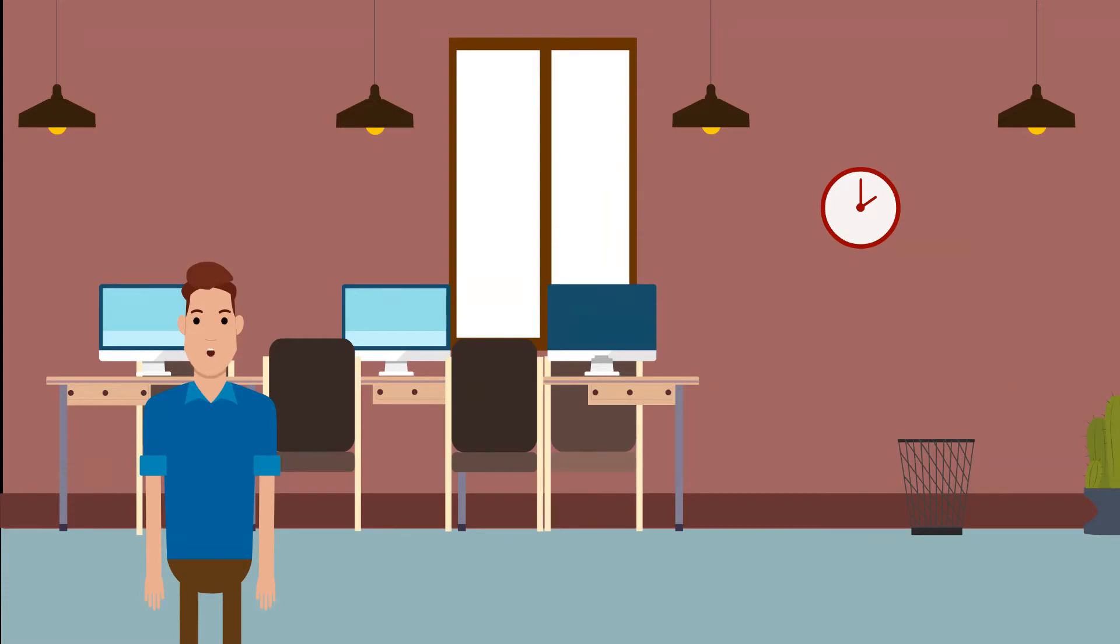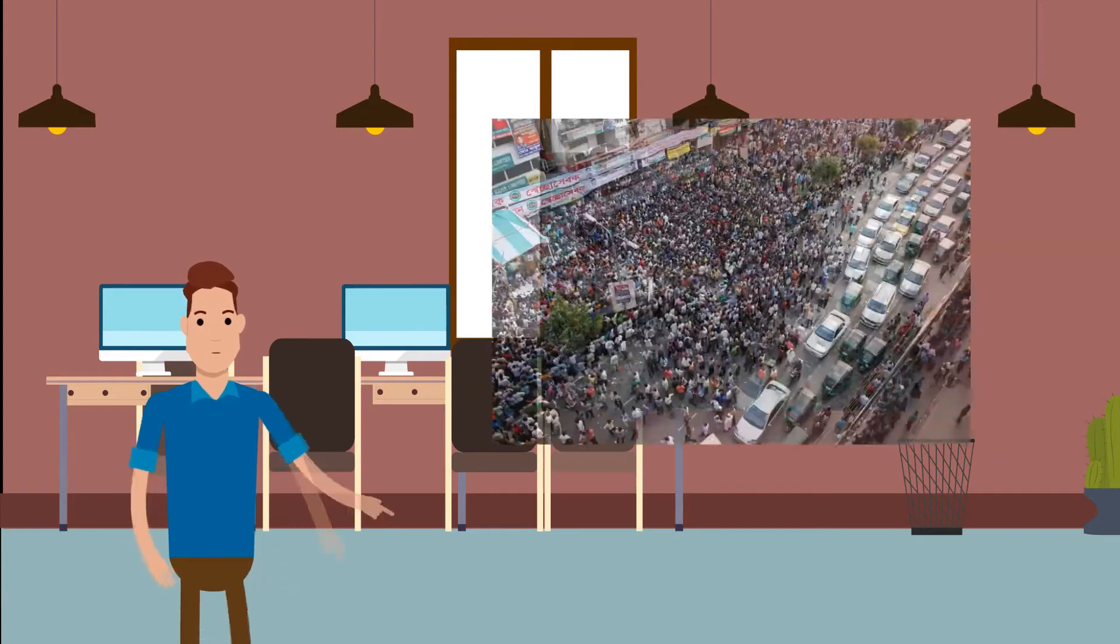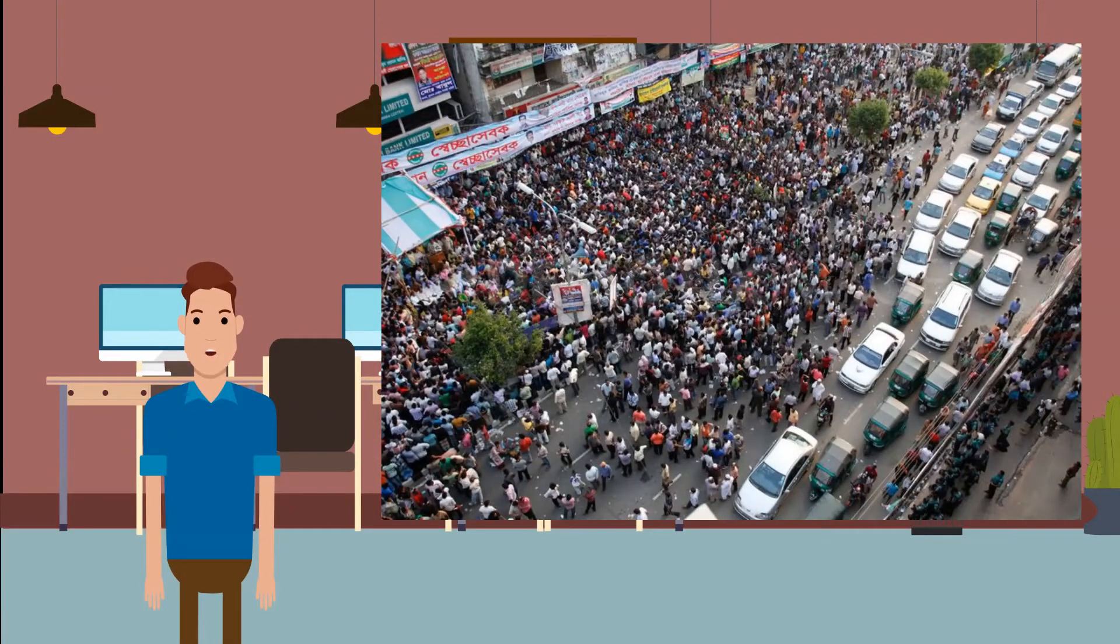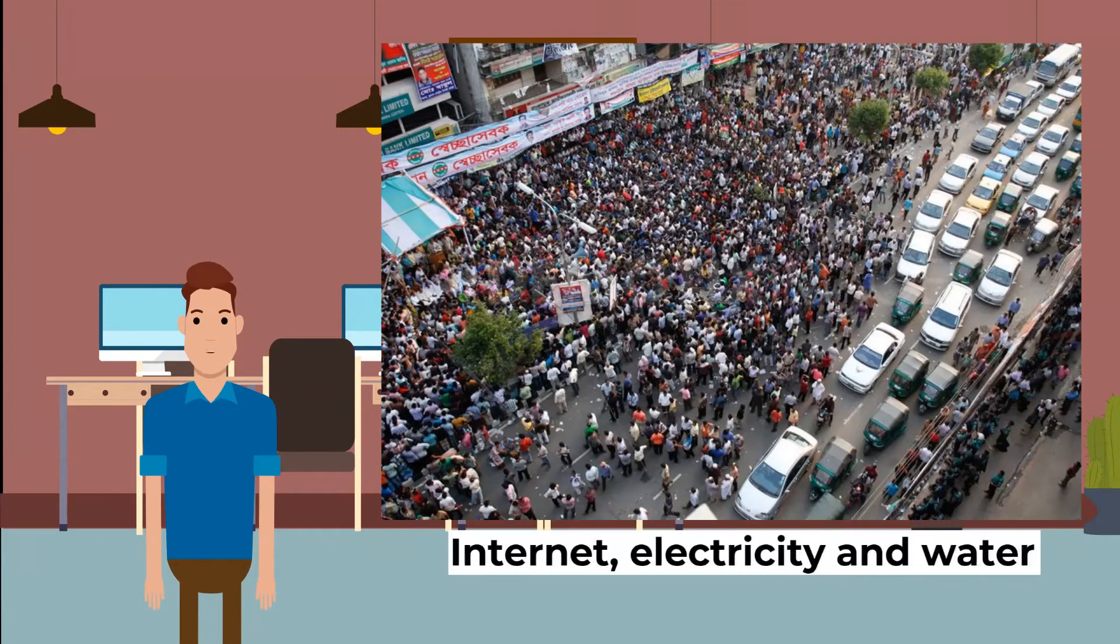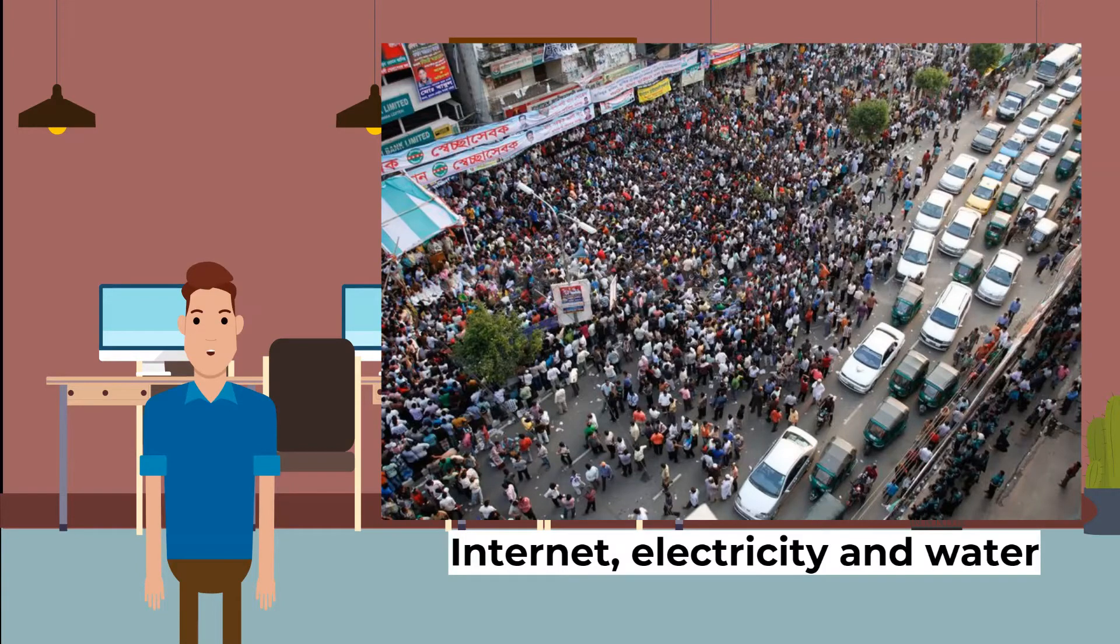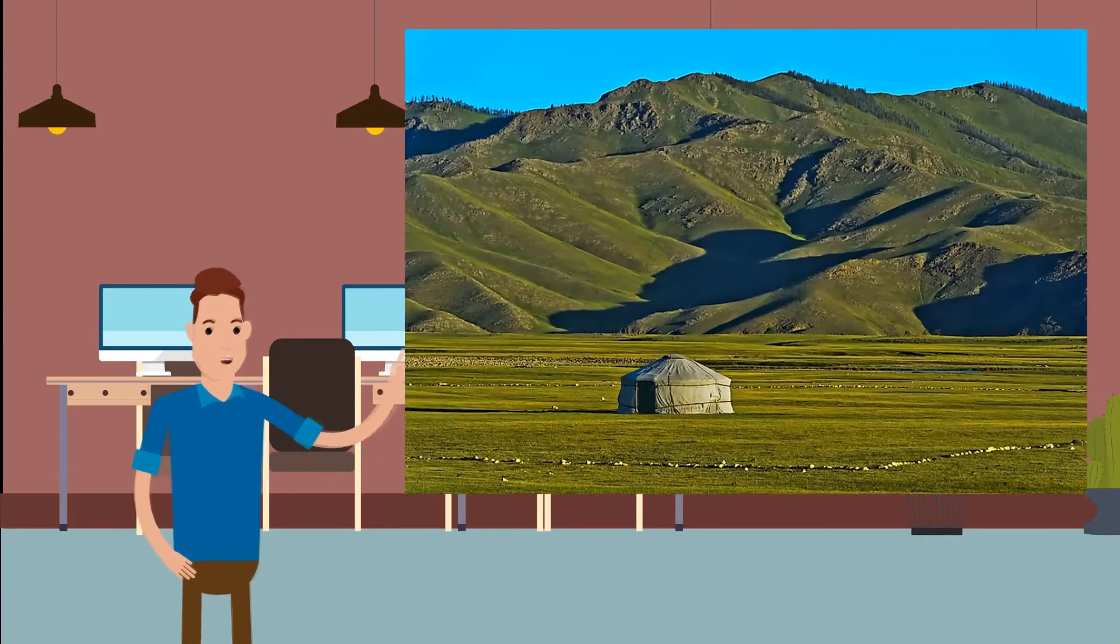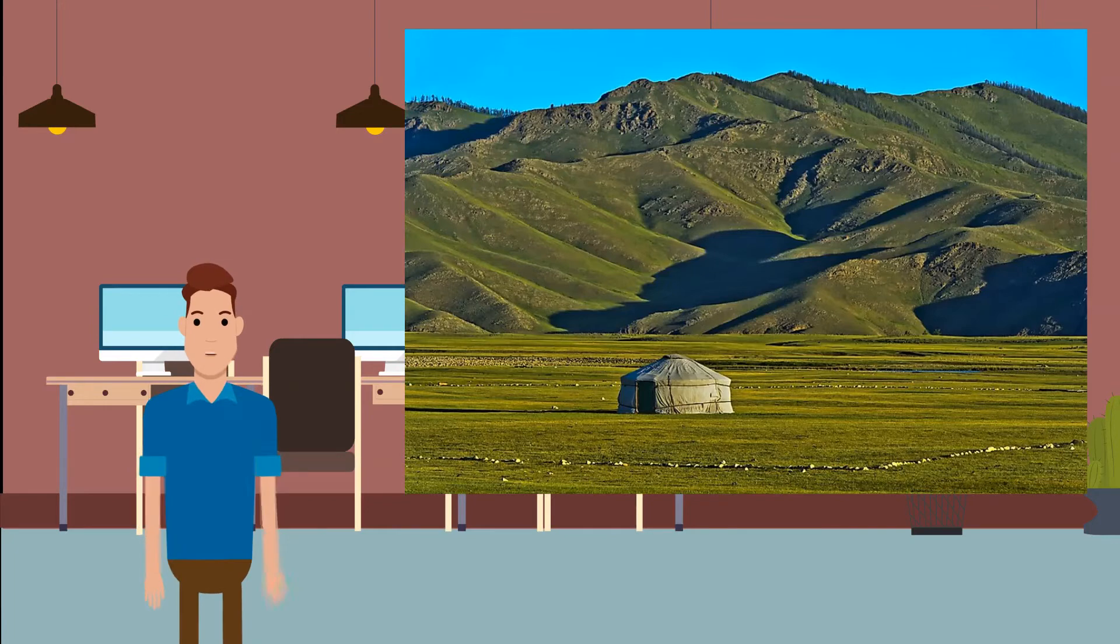Both low density and high density areas face their own problems. Regions with a high population density are at more risk from disease and the large number of people can cause greater pressure on resources such as internet, electricity, and water. Think about how your internet speed becomes slower with more people in the house. Areas with low population densities face similar issues with resources, but their problems are usually due to access and the difficulty providing resources to remote locations.